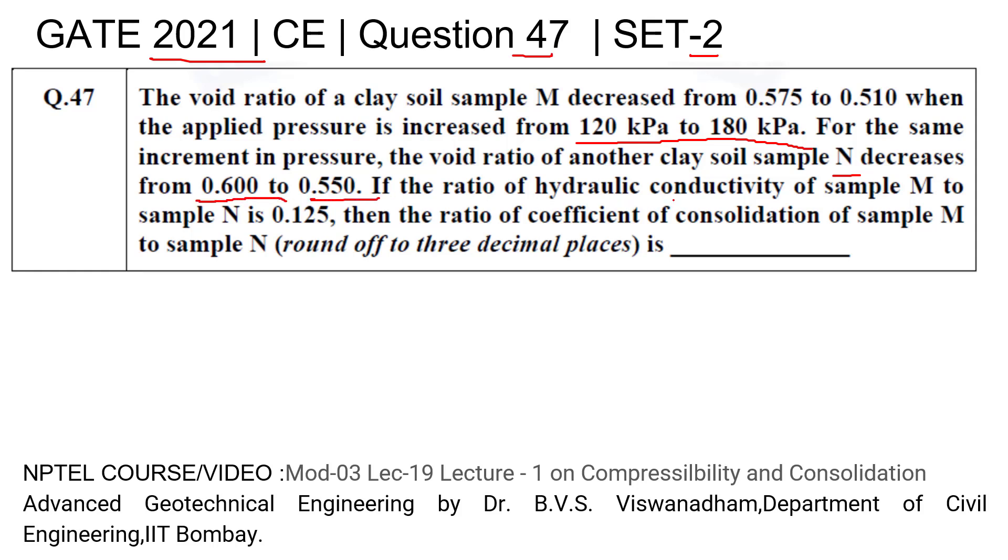If the ratio of hydraulic conductivity of sample M to sample N is 0.125, then the ratio of coefficient of consolidation of sample M to N will be what?